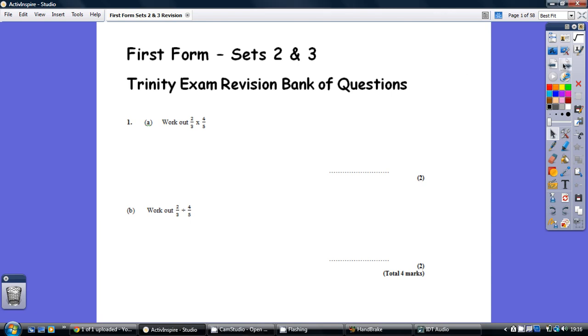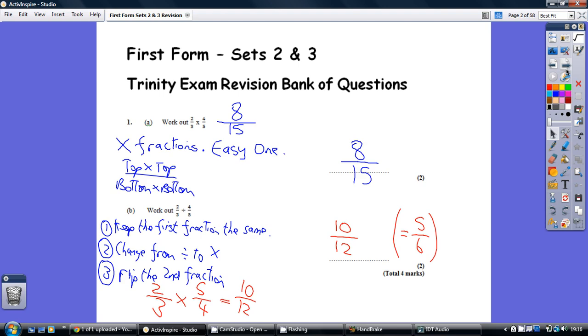Question 1, have a go. Okay, now multiplying fractions. This is the easy one. You just simply do the top number times the top number, so 2 times 4 is 8. And the bottom number times the bottom number, 3 times 5 is 15. So our answer is 8 over 15.